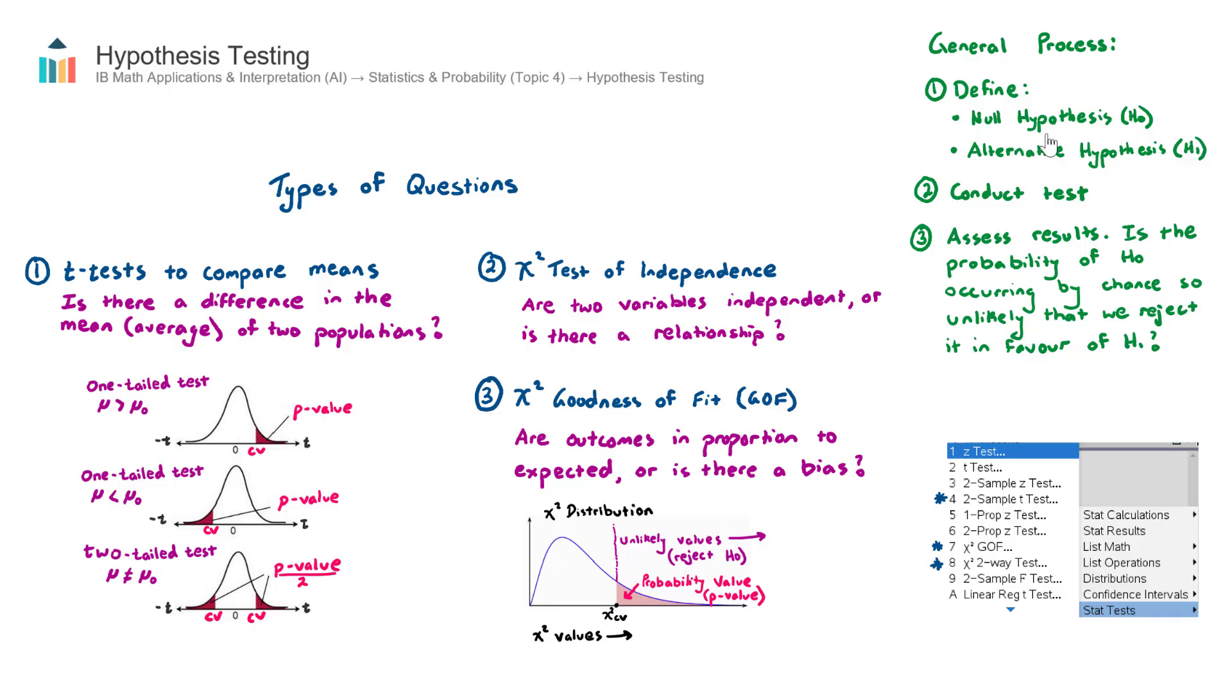Now of course, the smaller the probability of the null hypothesis being true, the more likely that we're going to decide it's too unlikely, we're going to reject the null hypothesis.